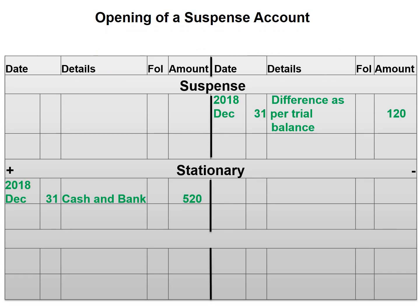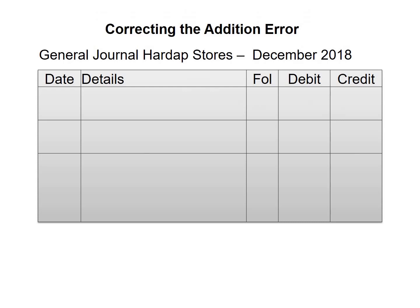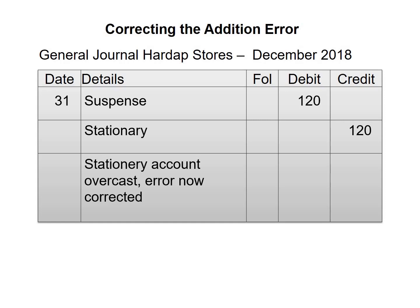Let's go and rectify this in our general journal. Starting with the date, 31. We will debit the suspense account in order to make the suspense account zero, and then we will credit stationery because we need to decrease stationery. The narration reads: 'Stationery account overcast. Error now corrected.'